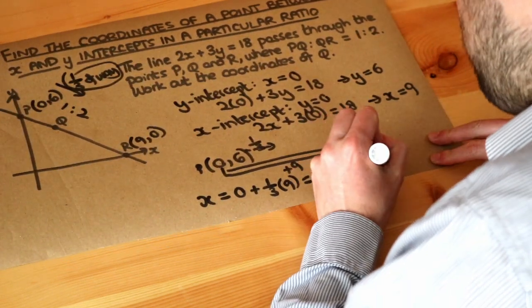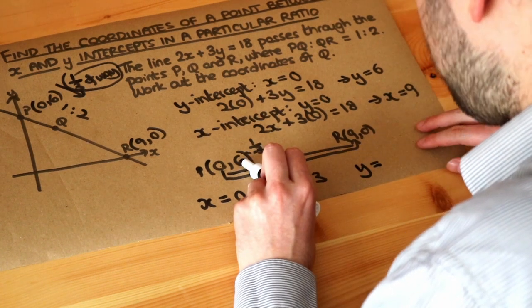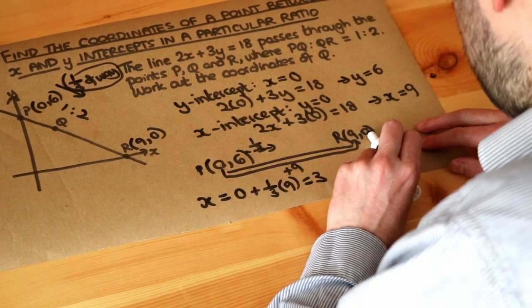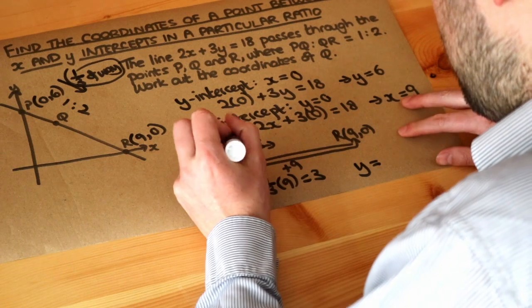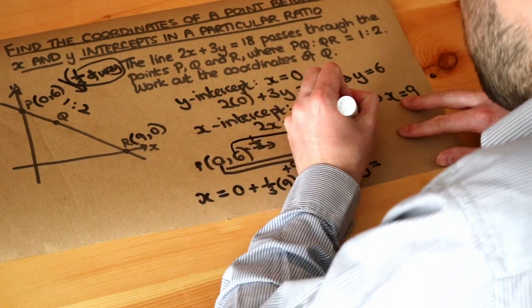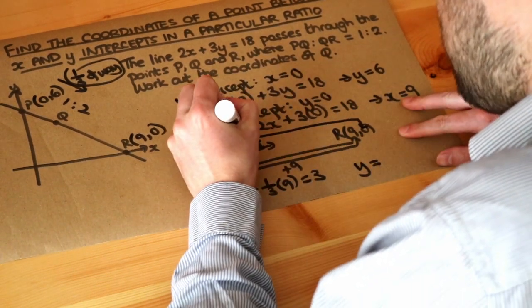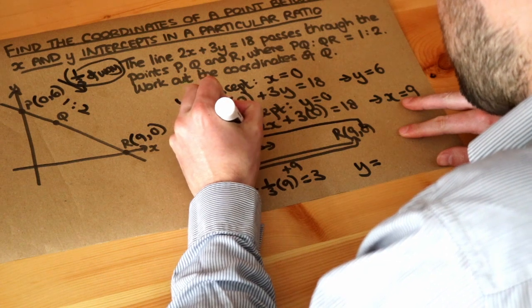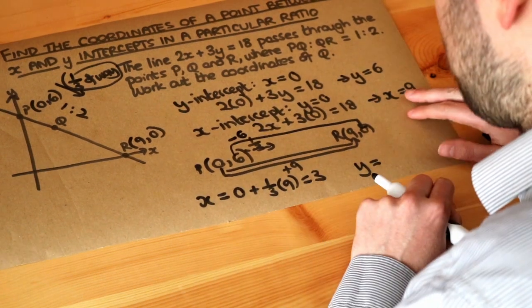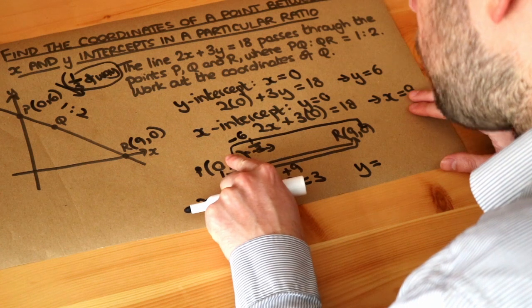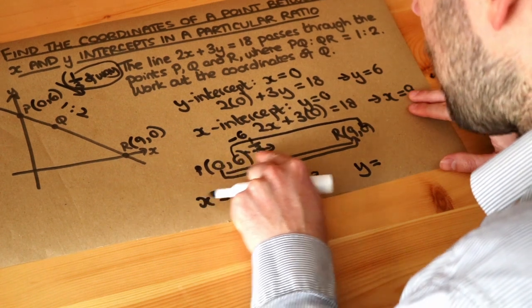And let's do the same now with the y values. We've got 6 here, the y value of 6, a y value of 0 here. So you can see between those two values, you're going down by 6. 6 to 0 is going down by 6. But we only want to do a third of that, because we're only going a third of the way along.